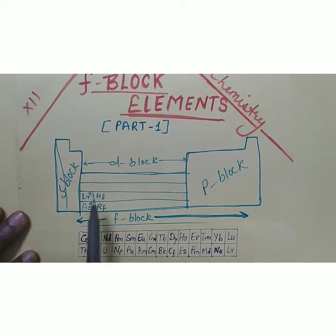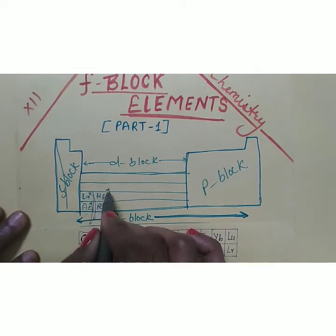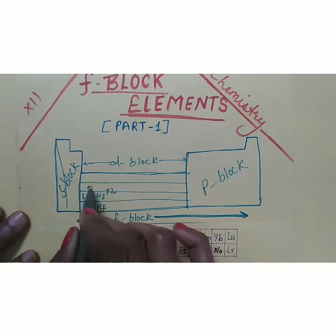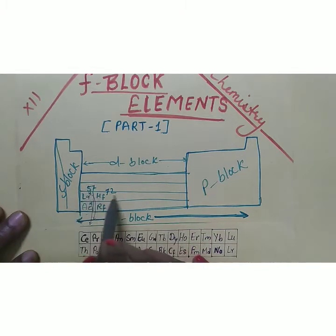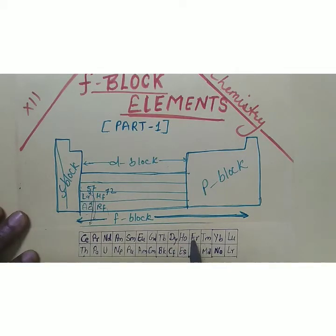F block starts after lanthanum and after actinium. Lanthanum has the atomic number 57 and hafnium has atomic number 72. The elements between lanthanum and hafnium are put in F block because in these elements the electron enters in F subshell.